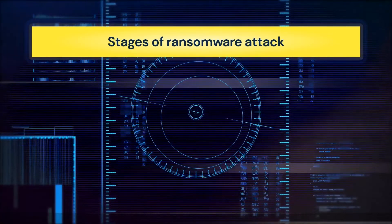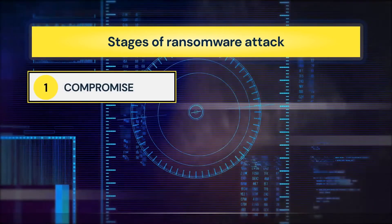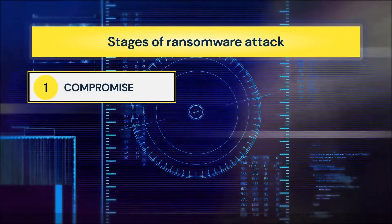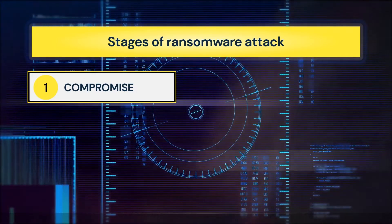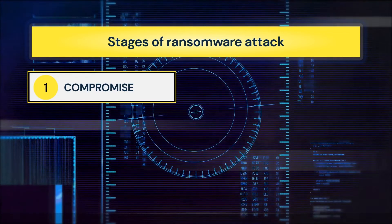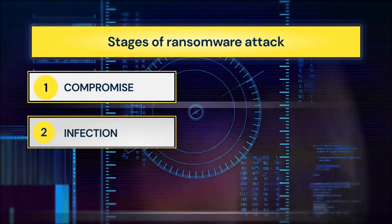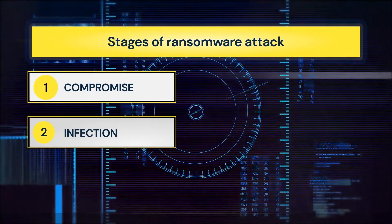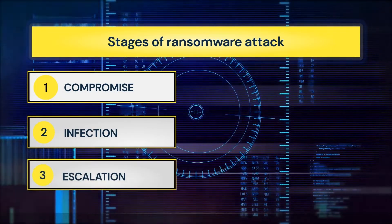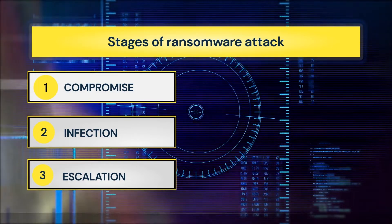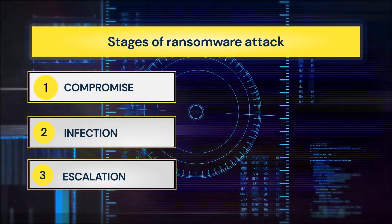Analysts define six main stages of a ransomware attack. The first is Compromise, also sometimes called an initial injection. At that point, attackers inject the malware into the network or the device if it is an attack against an individual user. The second stage is Infection, where crooks use the initial presence in the network they gained to inject the malicious payload. Most of the escalation stages in corporate networks are done through vulnerability exploitation, particularly ones that escalate privileges.